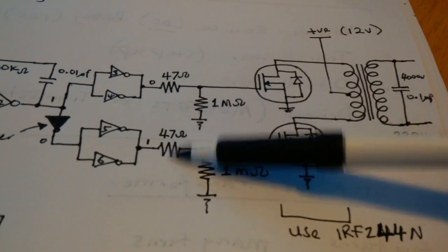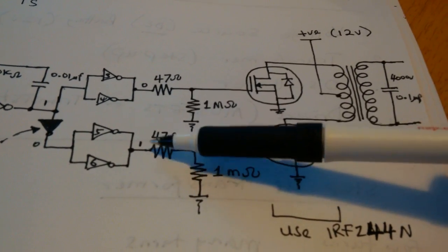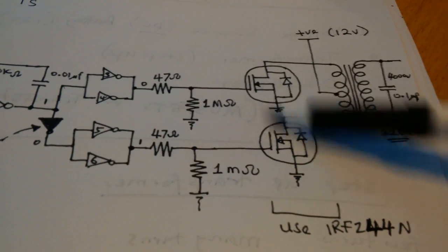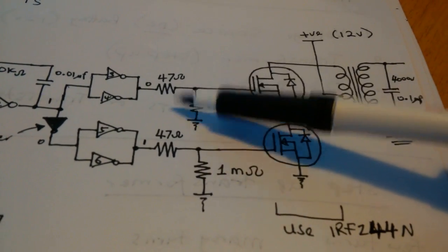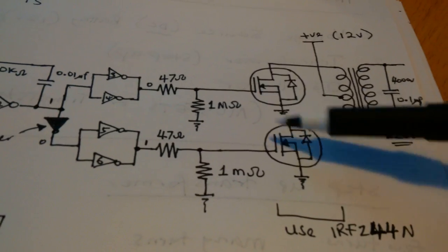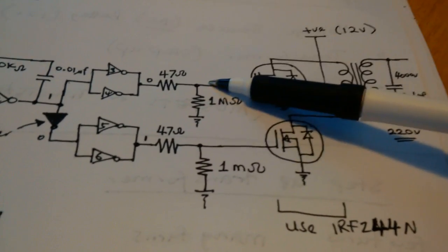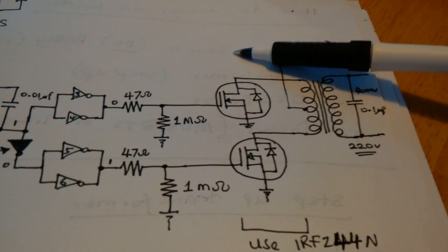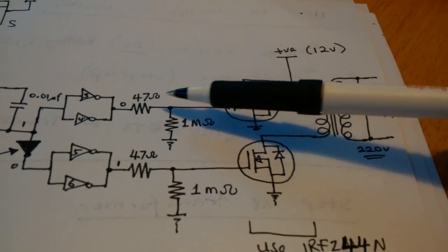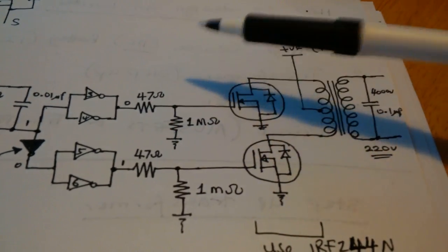Now, right here, we have 47 ohms resistors leading to the gate of each of the MOSFETs. If you have multiple MOSFETs, this is very, very important. For single MOSFETs, you might not need it, but for multiple MOSFETs, when you have MOSFETs in parallel, you need a gate resistor for each MOSFET.